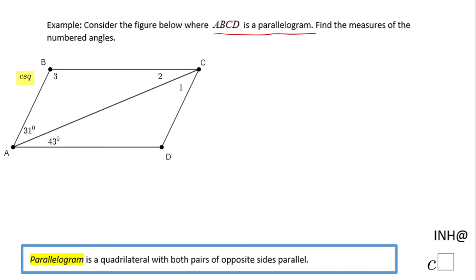Down here you see the definition of the parallelogram, which is a quadrilateral with both pairs of opposite sides parallel. So I'm going to use this property, this definition, for finding angle 1 and 2.